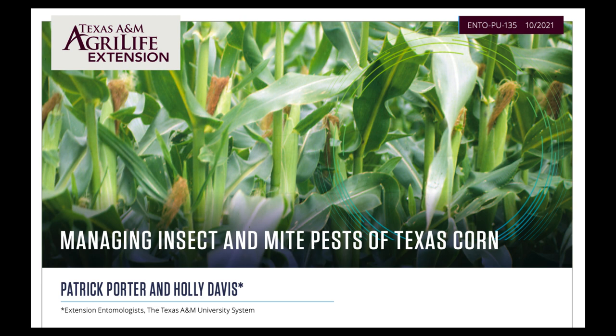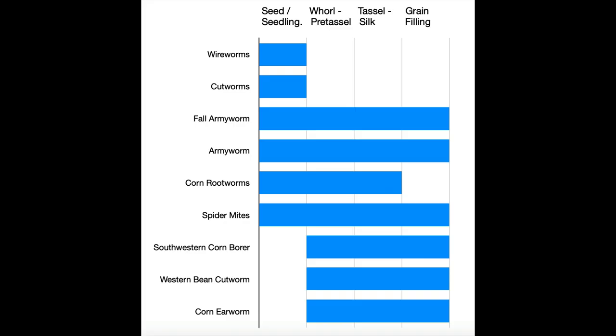Our large publication, Managing Insect and Mite Pests of Texas Corn, provides information on all of the major and minor pests of Texas corn. The remainder of this training will focus on the major pests listed here, because all of them can cause significant yield loss.